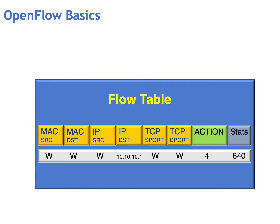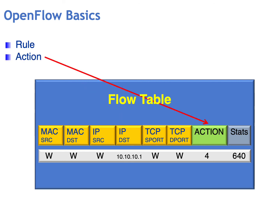Let's take a look at some of the basics within the flow table. You have MAC addresses, IP addresses, TCP ports, and TCP destination ports — these are typically referred to as a rule. For example, if I set the IP destination address to 10.10.10.1, this constitutes a rule. When that rule is met, I have an action — in this case, forward this packet to port number four. We also have statistics; here I'm demonstrating the ability to count the number of packets being forwarded to that port.